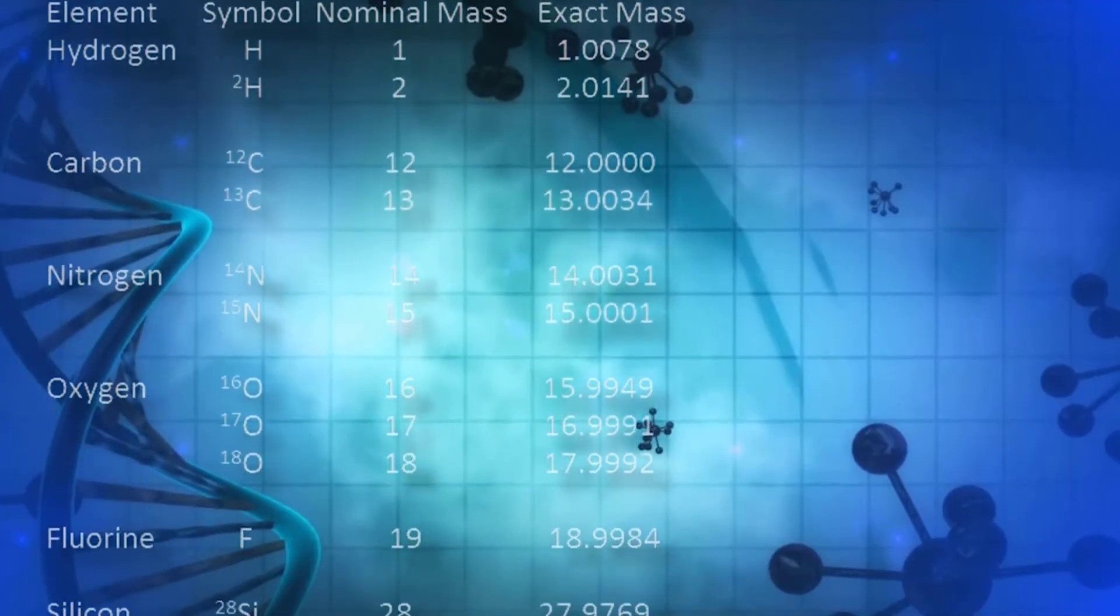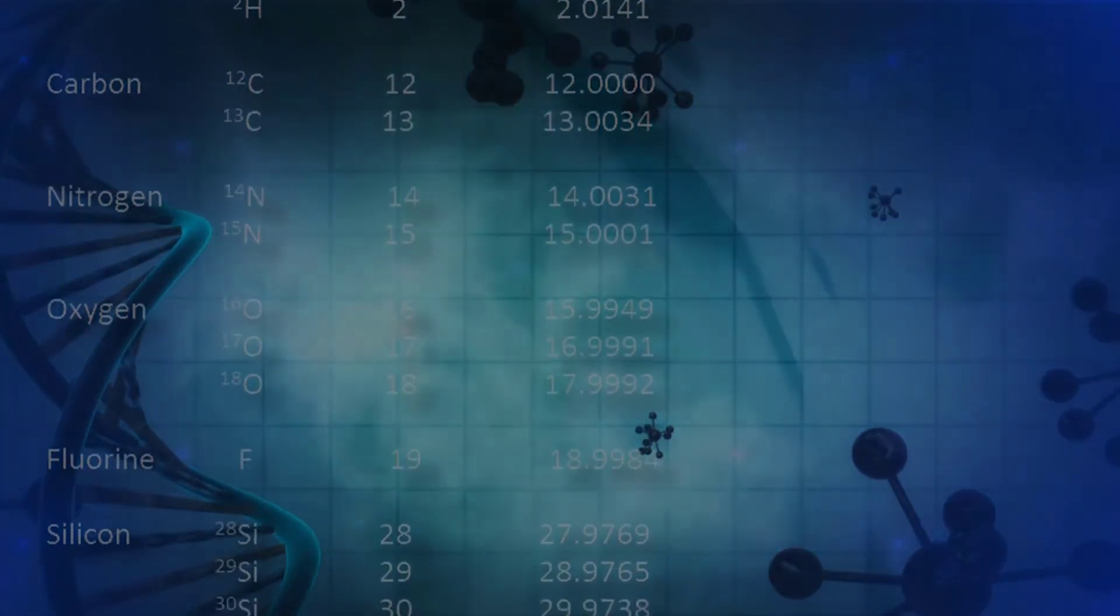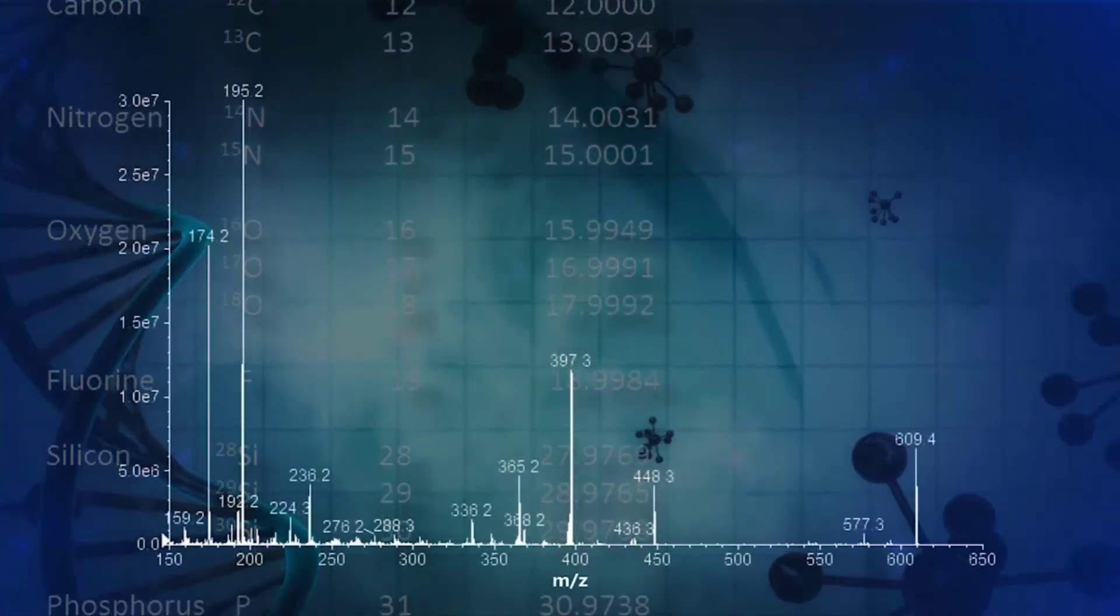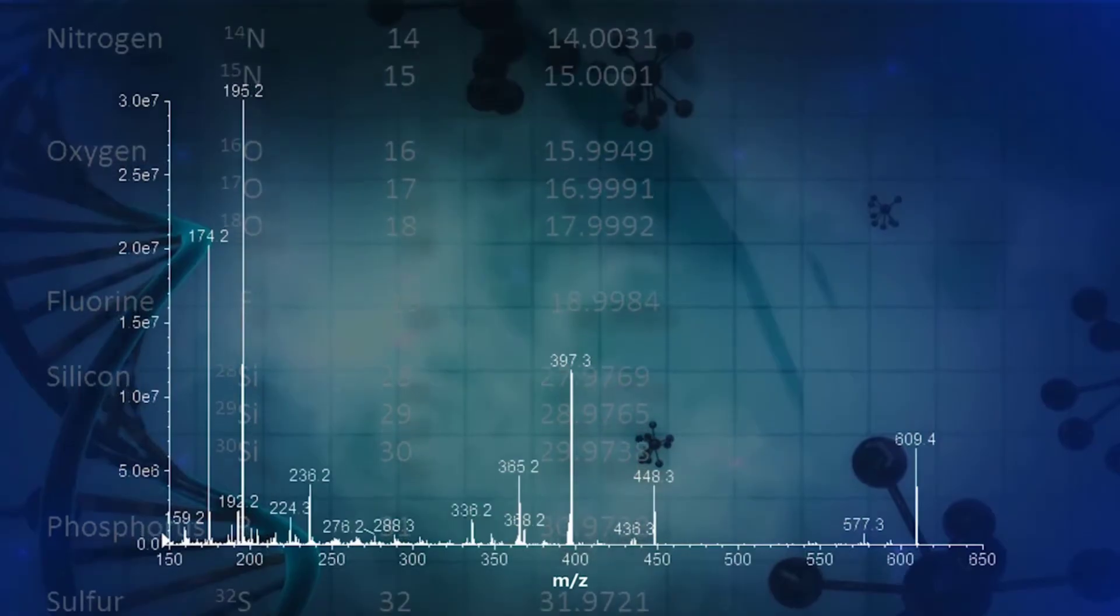Although the result of an experiment will give you the mass of a molecule, the mass spec is actually measuring the mass-to-charge ratio, or M over Z.